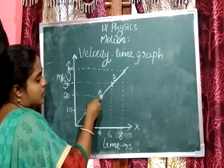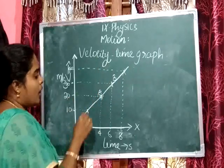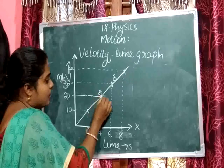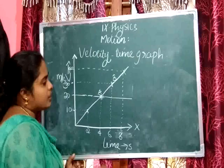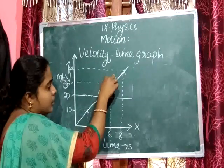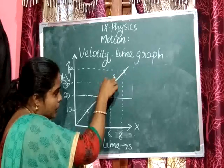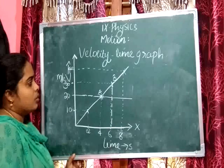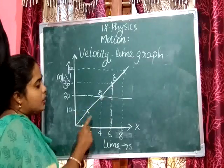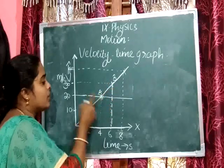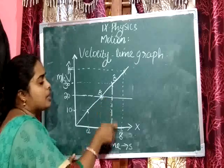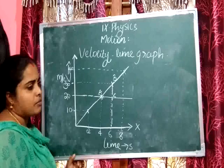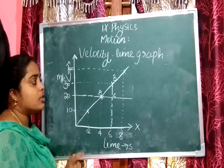Consider two points A and B on the graph. Draw a line parallel to the x-axis from point A. Then draw another line parallel to the y-axis from point B. These two lines meet at point C. So acceleration is equal to the slope of the graph.